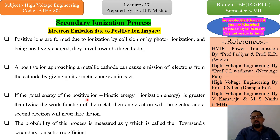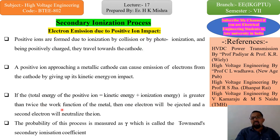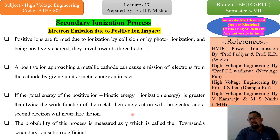If the total energy of the positive ion — which is equal to kinetic energy plus ionization energy — is greater than twice the work function of the metal, then one electron will be ejected and the second electron will neutralize the ion. So when the sum of kinetic energy and ionization energy becomes double the work function of the metal, one extra electron is ejected and the second electron neutralizes the ion.